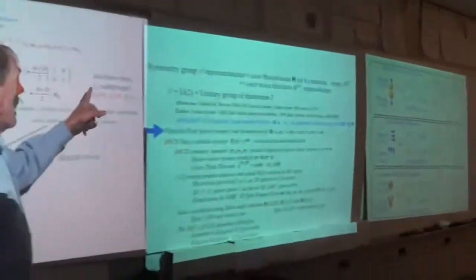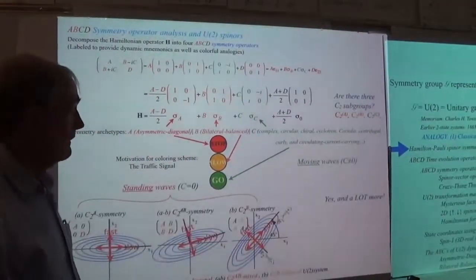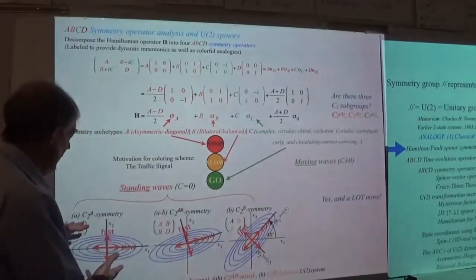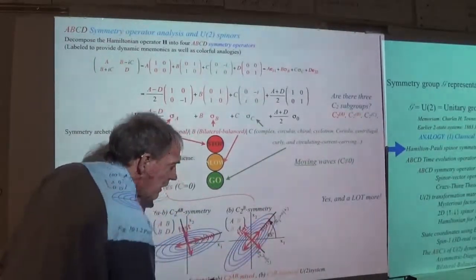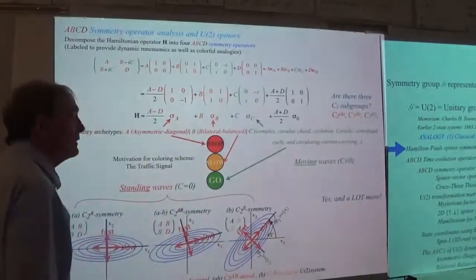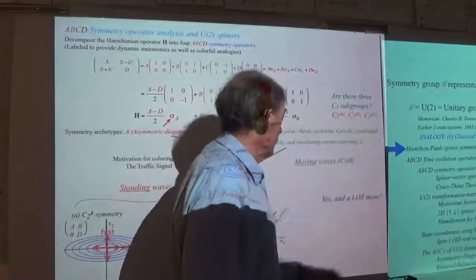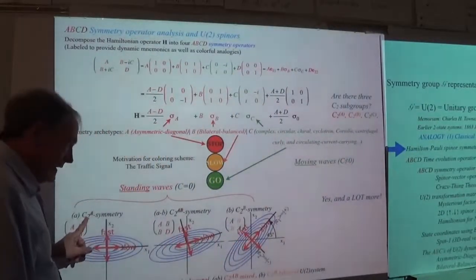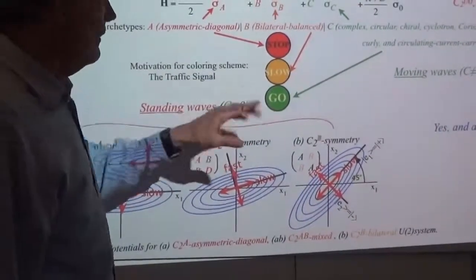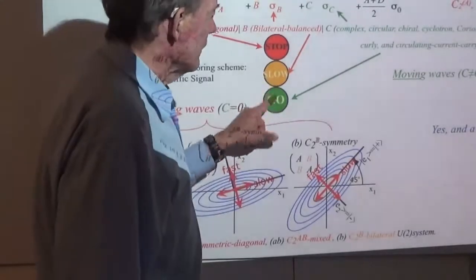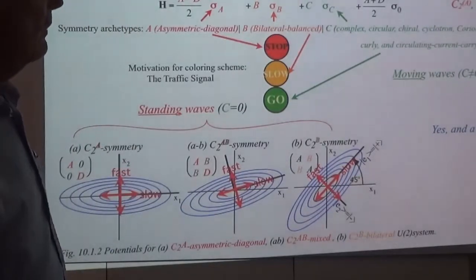So the question is, are there three C2 subgroups? The answer is yes, but there's a lot more. Here is the C2B that we worked on, which had a perfect 45-degree line for the lowest-frequency mode and another minus-45-degree line for the highest-frequency mode — that was our B symmetry. But there are these other two here: C2A, and then C2A and B combined at any angle. But none of this involves this C guy. They just sit and sputter — this C guy has to go, it's the one with the moving wave.